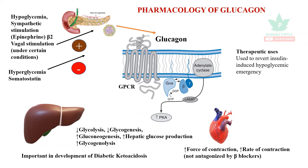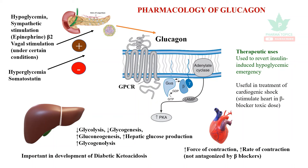When an excess dose of insulin leads to critical hypoglycemia, a glucagon injection can be administered. Glucagon is also useful in the treatment of cardiogenic shock caused by overdose of beta blockers.